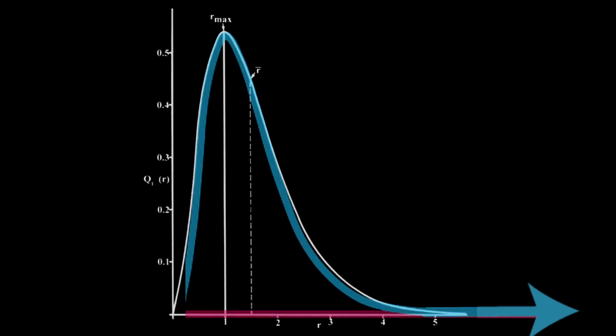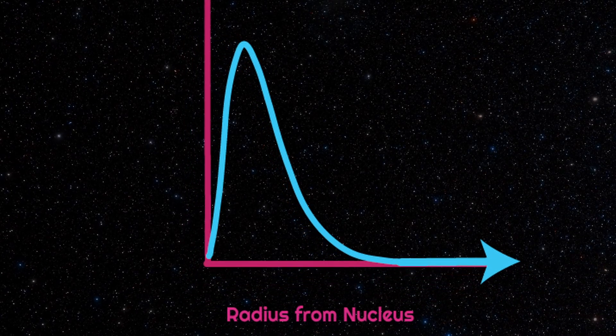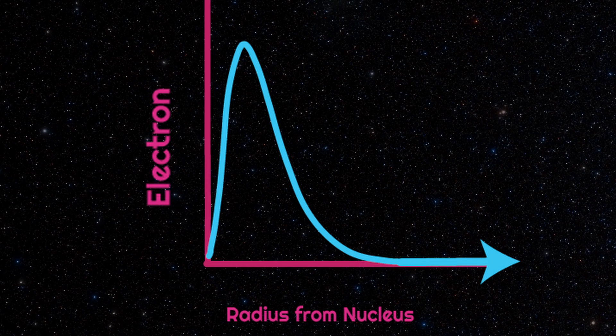The electron's RDF tells us that 99.999% of the shell is found within only 430 picometers of the nucleus.